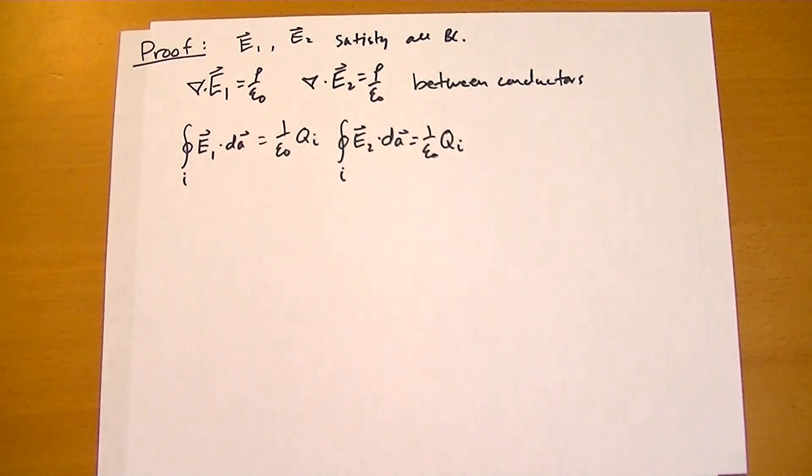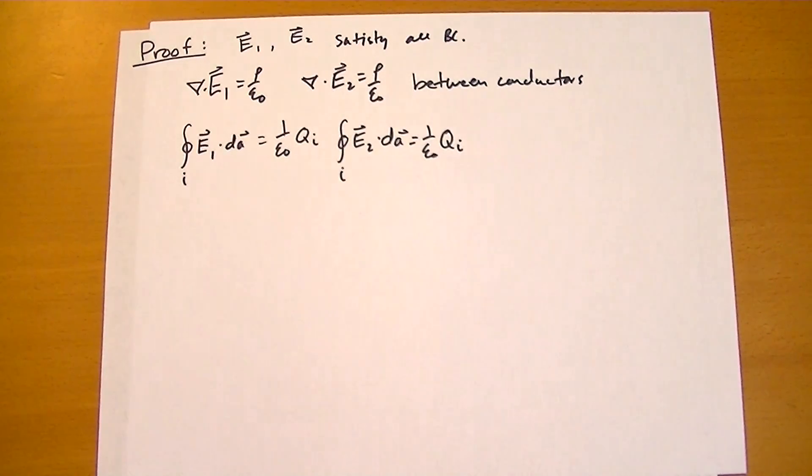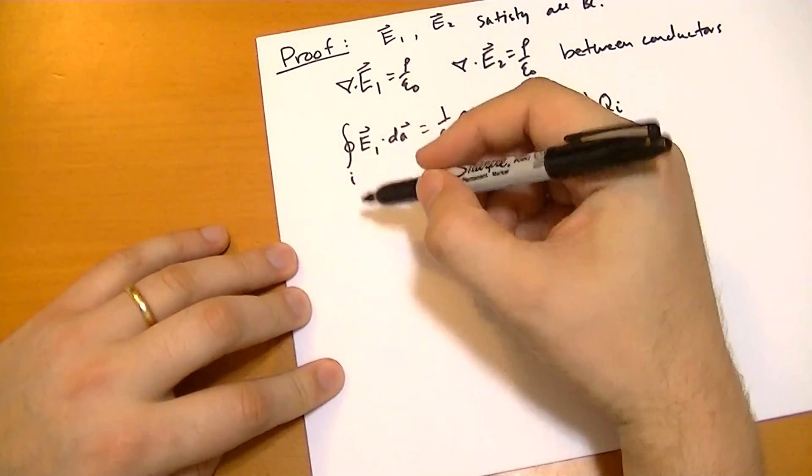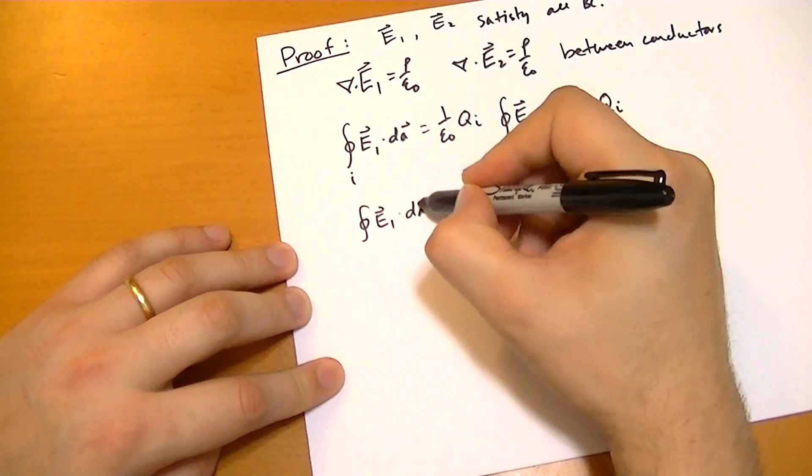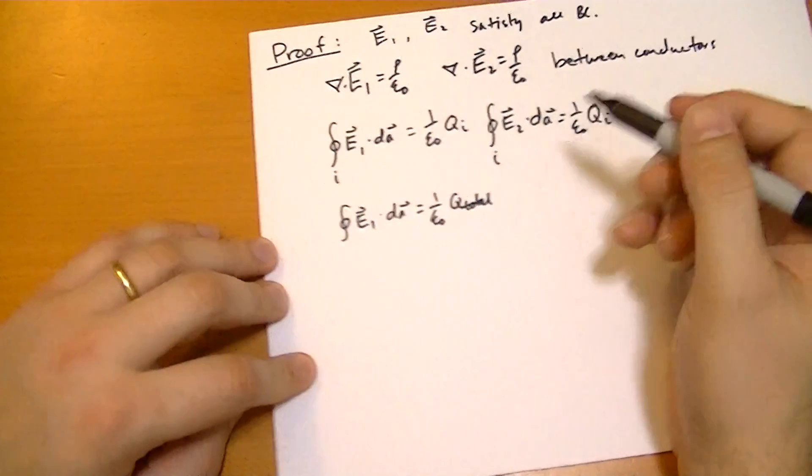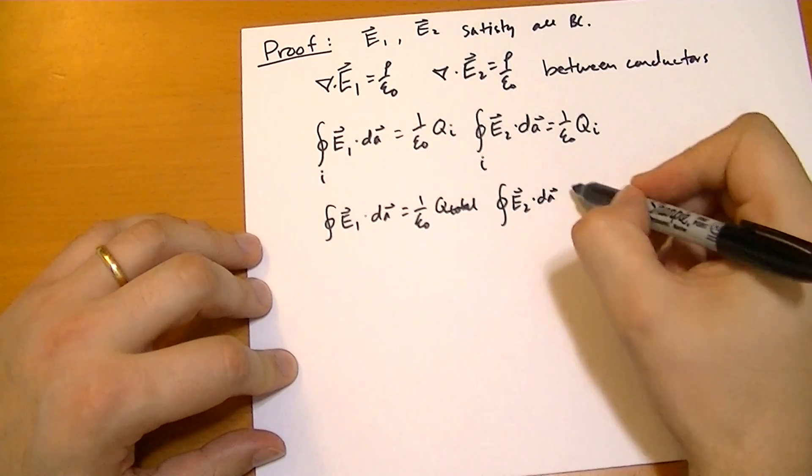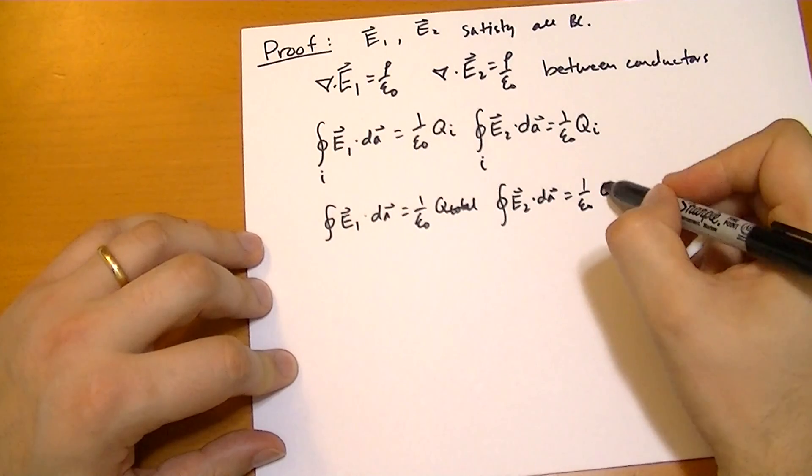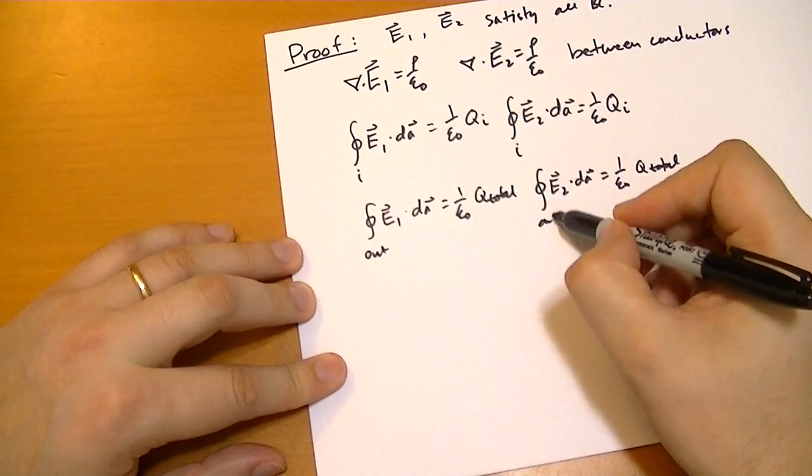And outside, the outside surface, we also have Gauss's law in integral form stating that the total charge of everything, including the rhos and all the conductors, equals 1 over epsilon naught times qi, this is the outside.